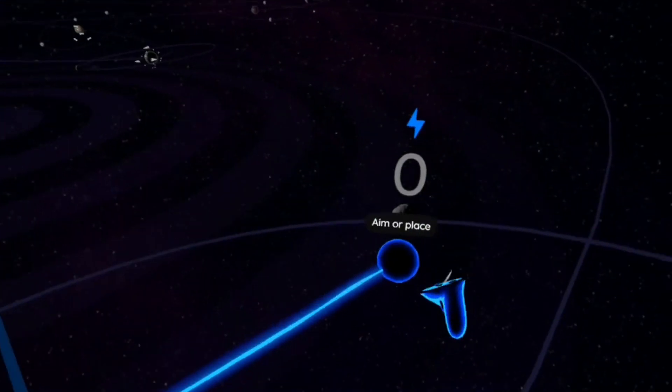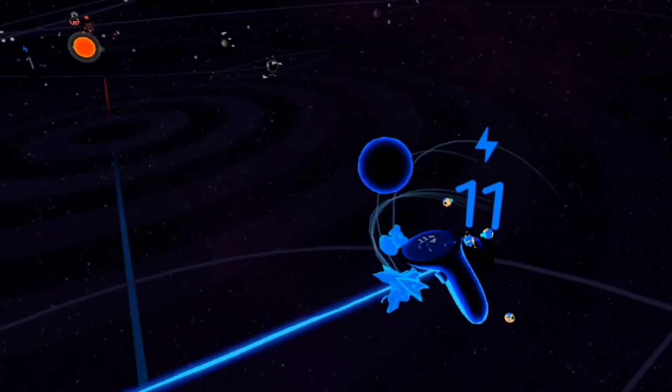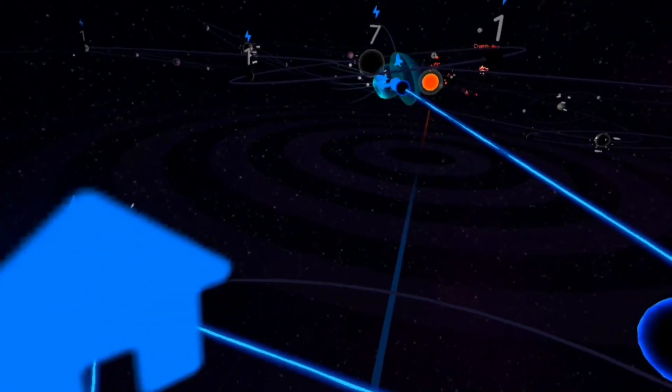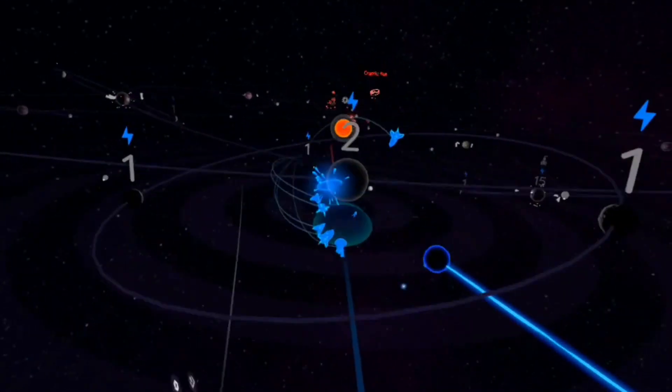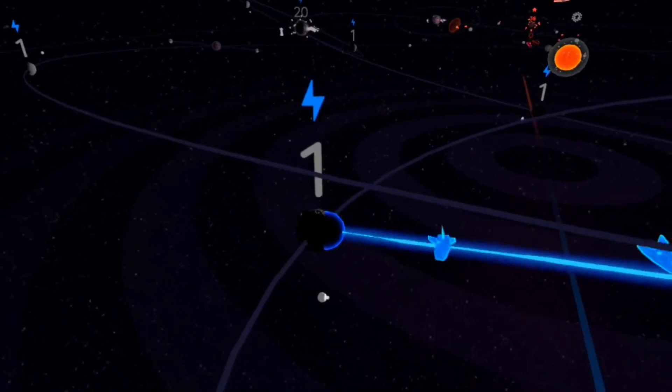You can use these wormholes to transport things around. You can either use little portals or just drag them around like a magnet. All right, let's take over this planet real quick. Okay, the planet has been took over. Let's teleport into different moons.